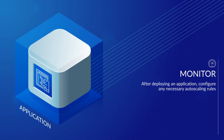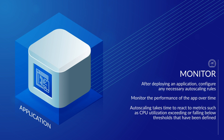After deploying an application, configure any autoscaling rules that are necessary. Once this is done, monitor the performance of the application over time, keeping in mind that autoscaling isn't necessarily an instantaneous process. It's going to take time to react to metrics such as CPU utilization either exceeding or falling below defined thresholds. After monitoring performance for a period of time, use the results to adjust how the system scales if necessary.